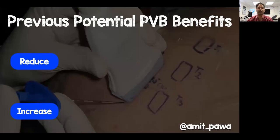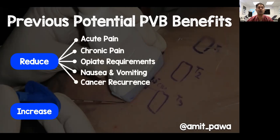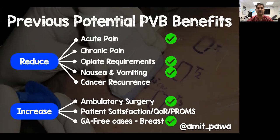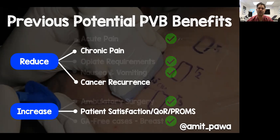In the past, people have talked about a whole host of potential benefits of paravertebral blocks — reduction in acute and chronic pain, opioid requirements, nausea and vomiting, and possibly even cancer recurrence. We've also highlighted the ability to perform more ambulatory surgery, surgery without general anaesthesia, and better patient satisfaction and quality of recovery. The items with a tick are fairly established in the literature. Where more investigation is needed are chronic pain, cancer recurrence, and patient satisfaction.